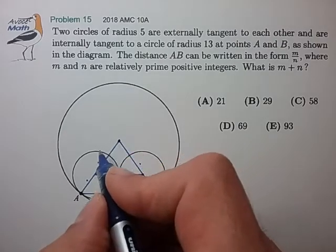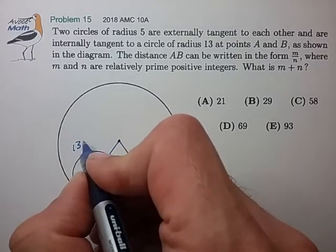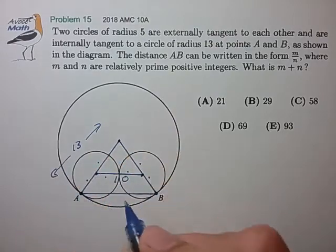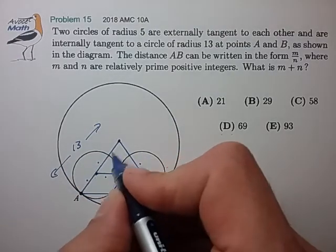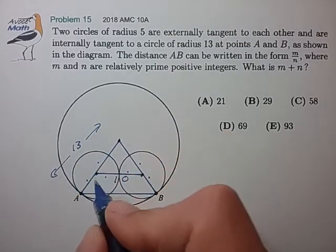We know that the radius of the large circle is 13. So this smaller segment from here to here is 13 minus 5, or 8.